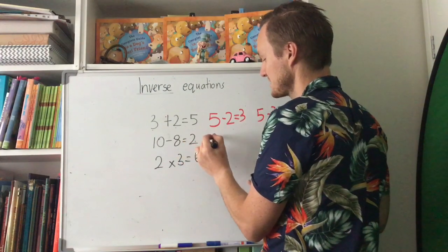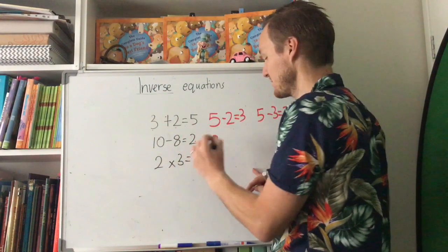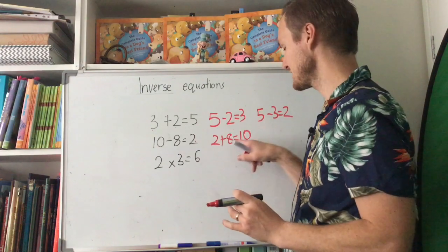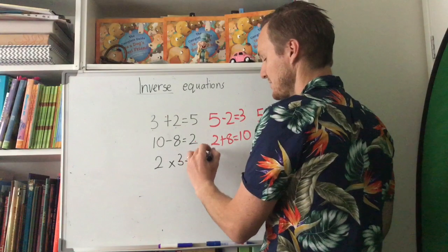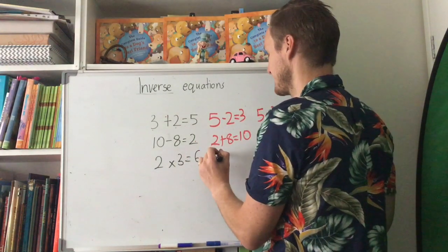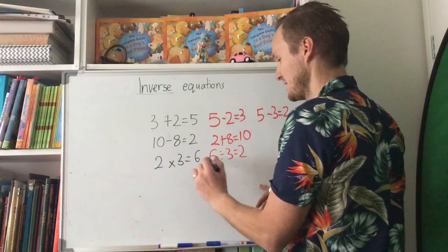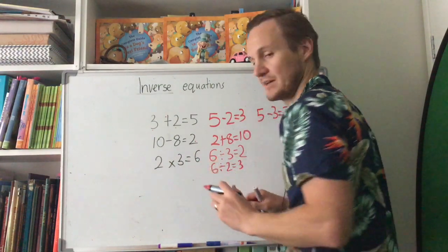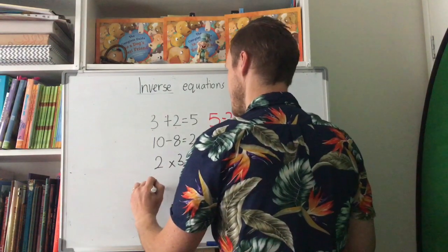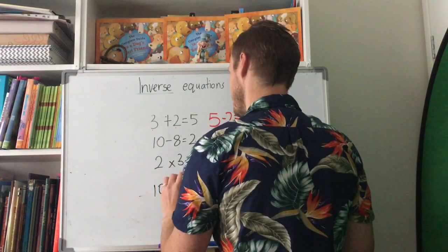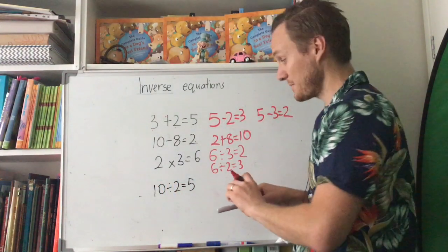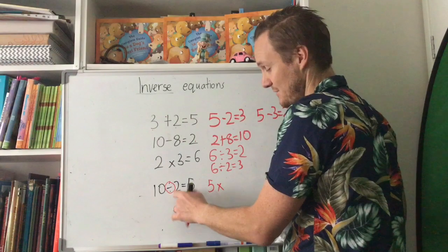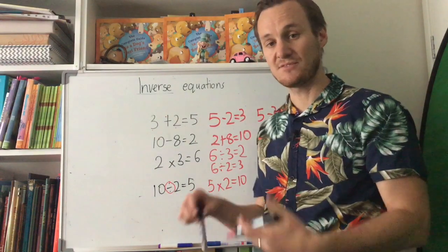So remember: take the answer first, then change the operation to the opposite. For example, 2 plus 8 equals 10. Now let's try a multiplication one: start with the answer, change the operation to the opposite — divide by 3 equals 2. We could also do 6 divided by 2 equals 3. Let's try with division as well: 10 divided by 2 equals 5, so the inverse is 5 times 2 equals 10.